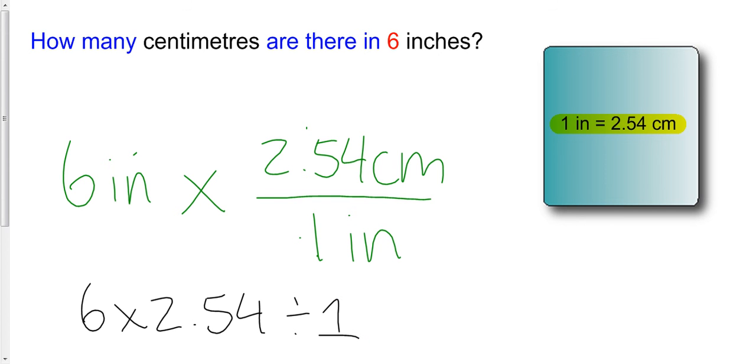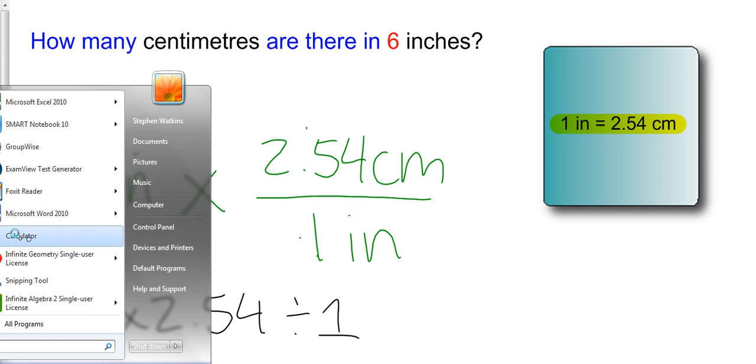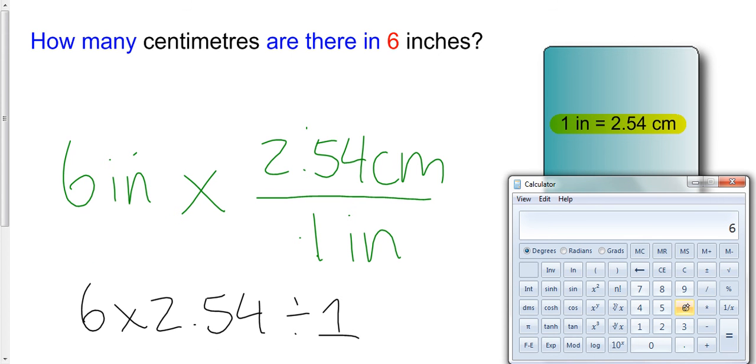And I can just pull out a calculator to finish this off. What is 6 times 2.54? That is 15.24. And I don't really have to sit here and divide by 1, because any number divided by 1 is just itself. So we're going to wind up with 15.24.